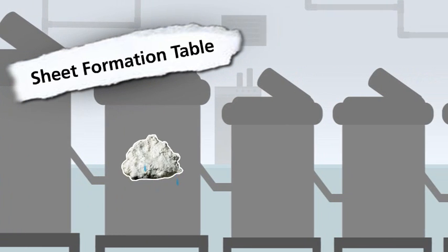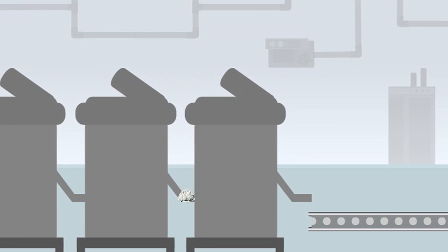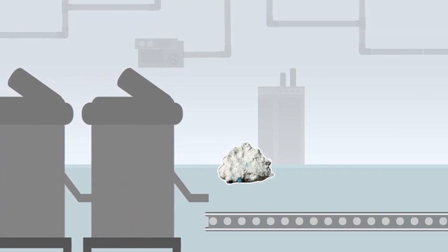The pulp is transported with a large amount of water, which starts being removed on the formation table, where the sheet starts gaining shape.